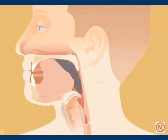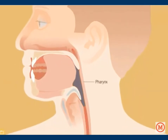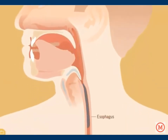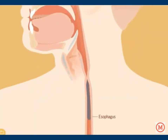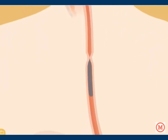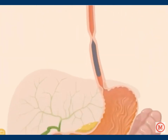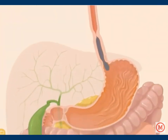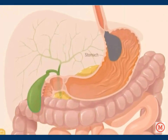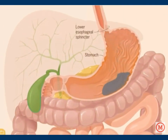The food bolus passes through the pharynx and into the esophagus. Peristalsis, which is rhythmic contractions of the muscle layers, pushes the bolus down the esophagus. The bolus passes into the stomach through the lower esophageal sphincter, which normally remains closed, preventing reflux of the stomach contents.